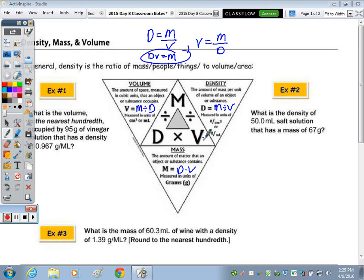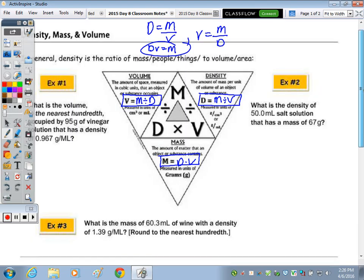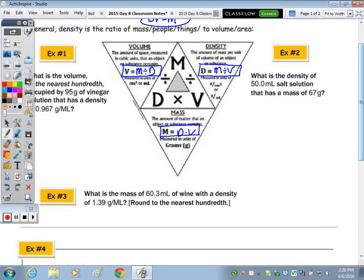At the top of the page it says in general, density is the ratio of mass of people or things to volume or area. We've used the equation mass over volume equals density to come up with the equations that are filled in within this triangle. Now we're going to have three volunteers come up to do problems one through three as a review.